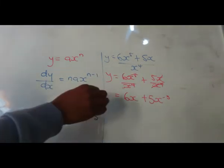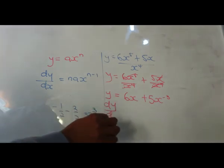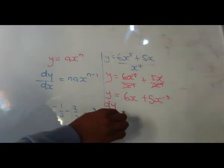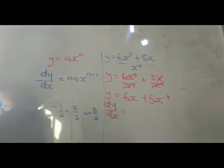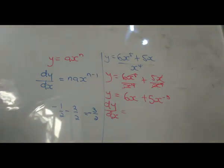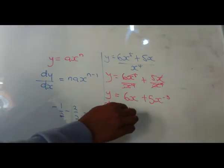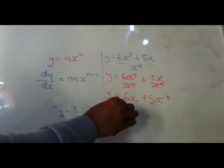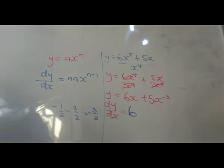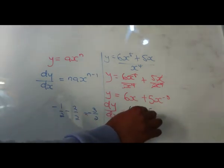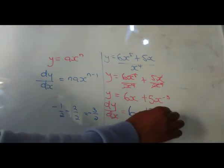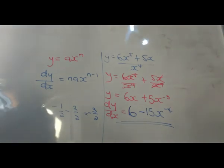By saying dy over dx is equal to the derivative of this. There's a number which is 1 here which we don't write, so it's 1 times 6, which remains 6. Then we have minus 3 times 5, which is minus 15x to the power of minus 3 minus 1, which is minus 4. So this is the final answer. I hope you got it right. Thank you for joining, we'll see you next time.